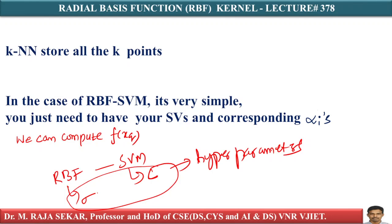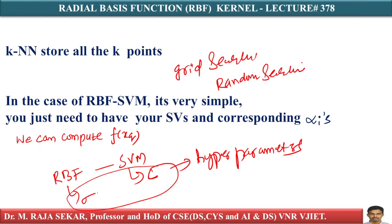So if you don't know which kernel to use, just use the RBF kernel. When using RBF-SVM you have two hyper-parameters: c and sigma. In soft-margin SVM you have the parameter c; in RBF you have the parameter sigma. C and sigma are the hyper-parameters. Sigma is related to the RBF; c is related to soft-margin SVM. These can be calculated using grid search or random search.